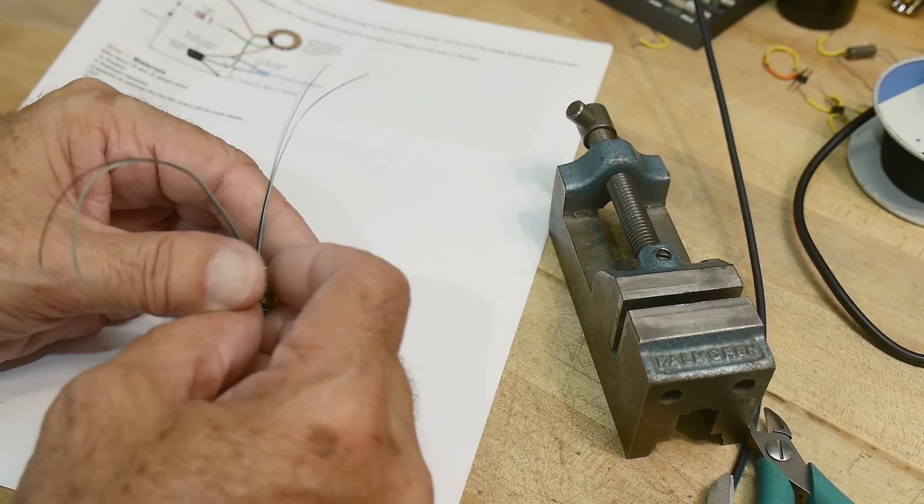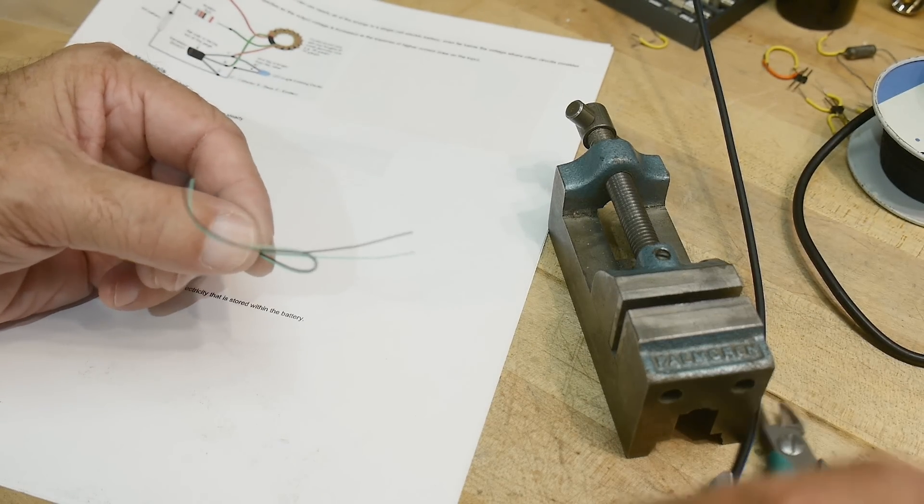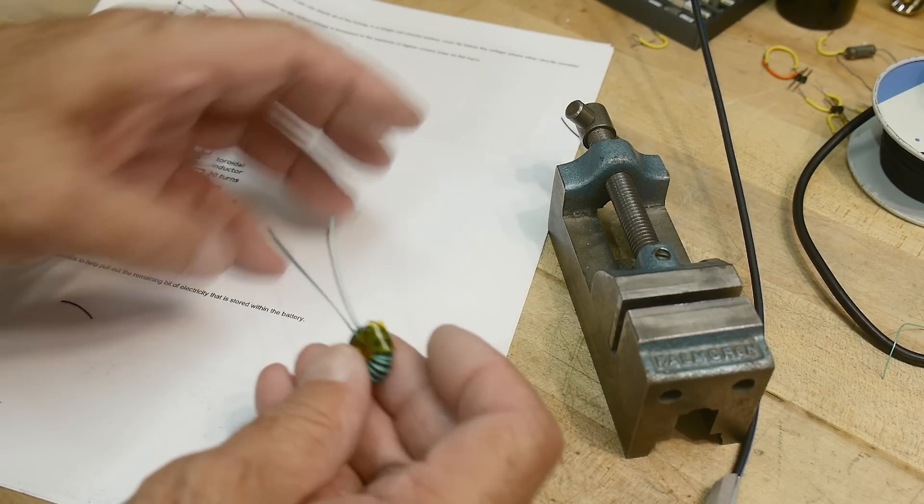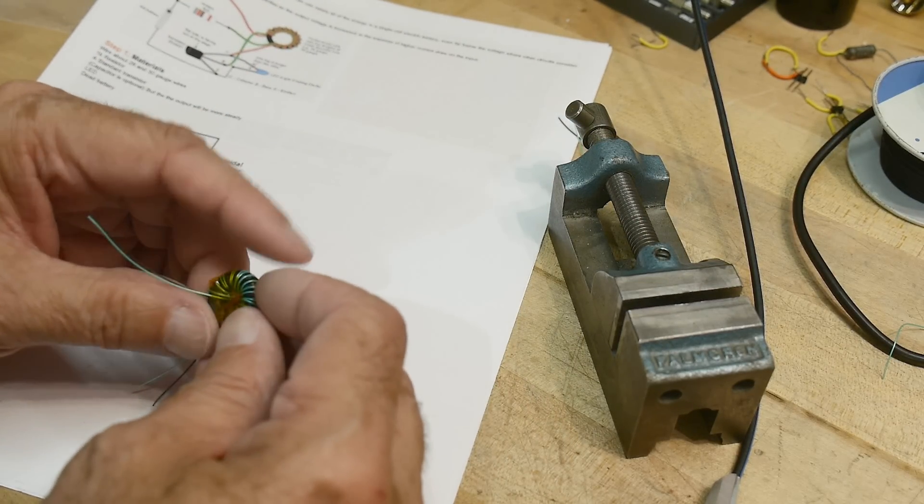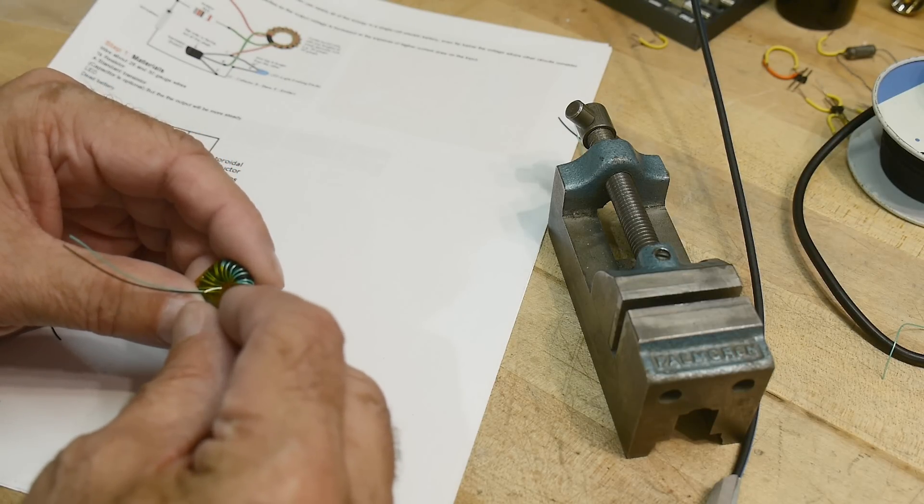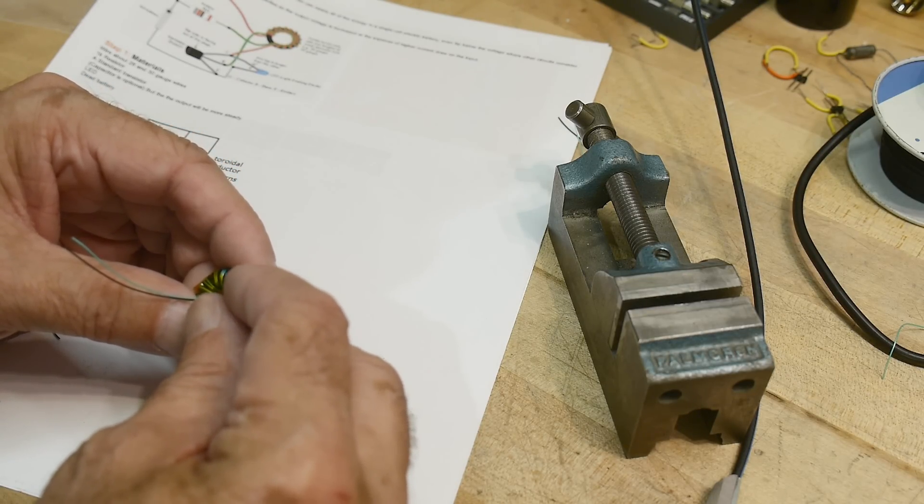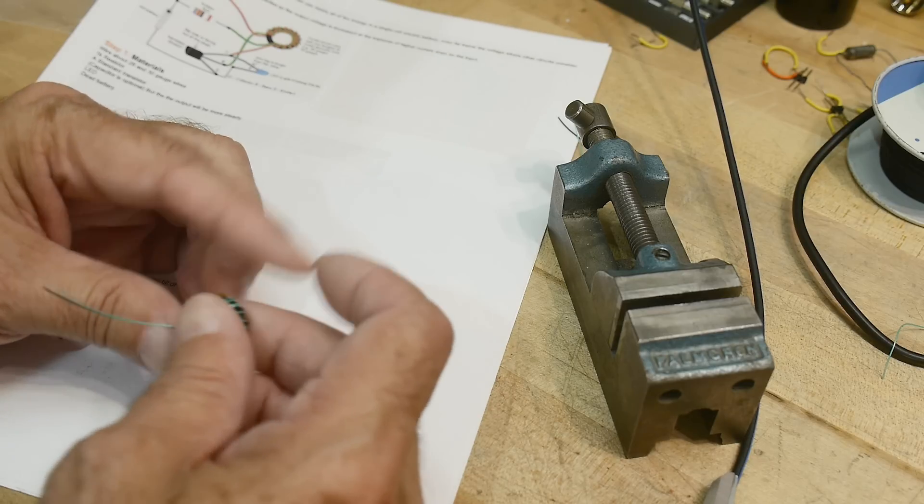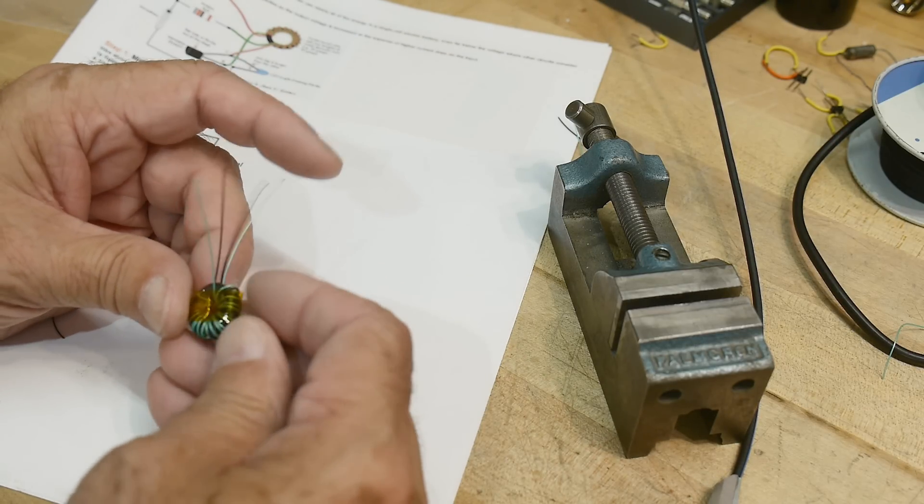All right. So we have something here with a reasonable amount of turns on it. 1, 2, 3, 4, 5, 6, 7, 8, 9, 10, 11, 12, 13, 14, 15, 16, 17, 18, 19, 20. Okay, right about 20. Excellent.